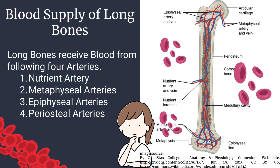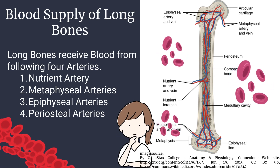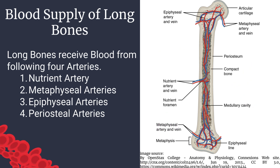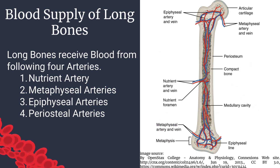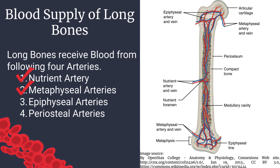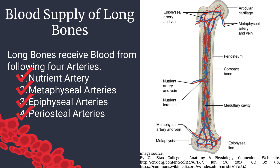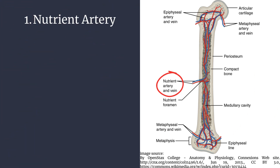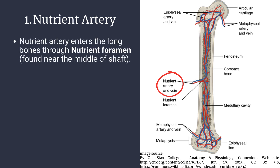In this video we will talk about blood supply of long bones. Long bones receive blood from the following four arteries: nutrient artery, metaphyseal arteries, epiphyseal arteries, and periosteal arteries.